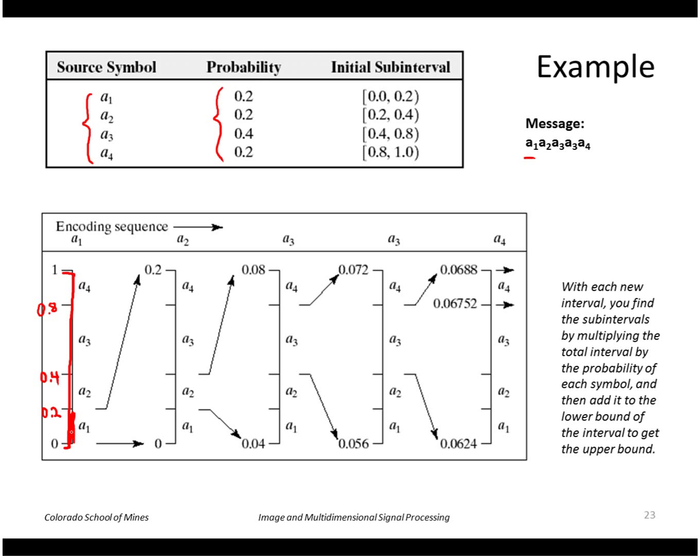Next we look at the second symbol, which in this case is an a2. So we expand this interval of 0 to 0.2 again using the same percentages. Twenty percent of the way from 0 to 0.2 is 0.04, and then twenty percent up from that is 0.08, and then up from that would be 0.16. So if symbol a2 is our second symbol, we know now that our value is between 0.04 and 0.08.